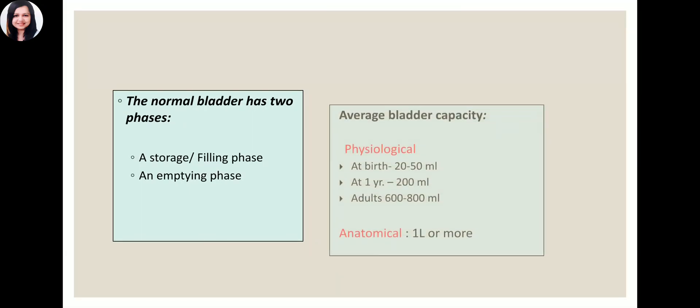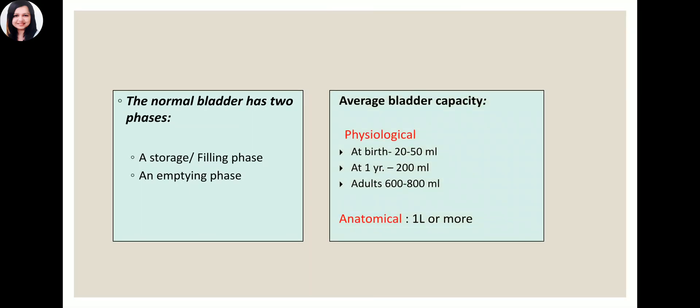The volume the bladder can accommodate depends upon age. In newborns the capacity is very small — 20 to 50 ml — so they pass urine very often. At one year it is 200 ml. In adults it is 600 to 800 ml. One liter is the maximum capacity, beyond which even the bladder may rupture.